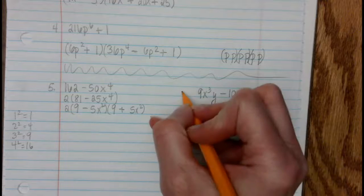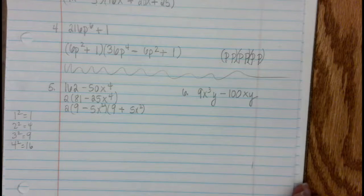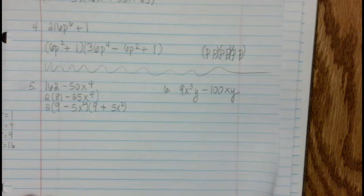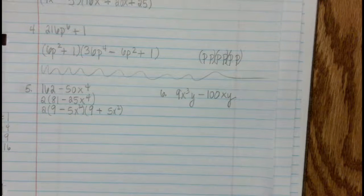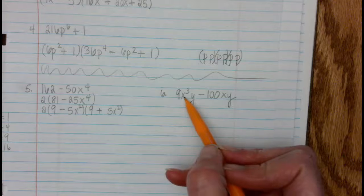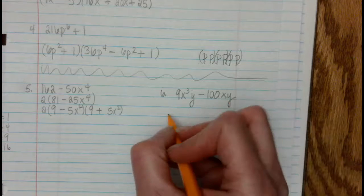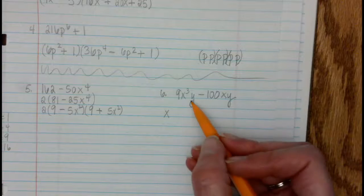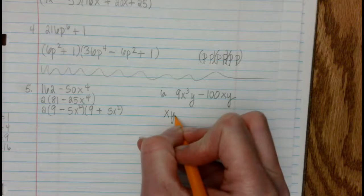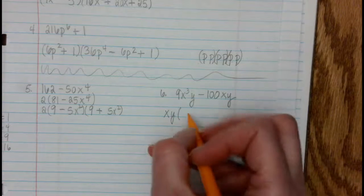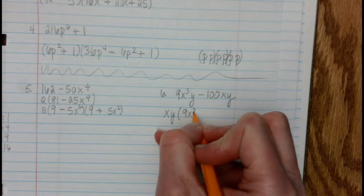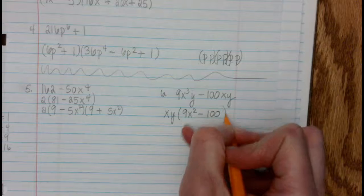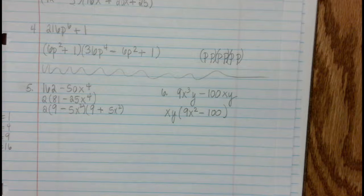So if we look over here to problem number six, it's the same idea, and what we want to look for is, do we have a greatest common factor? And between x cubed and x, it's an x, the lowest exponent. Between y and y, it's y, so we factor that out. Now we're left with 9x squared minus 100, and then again, it's the difference between two squares.